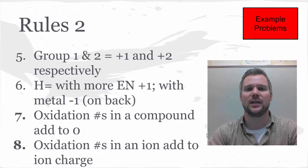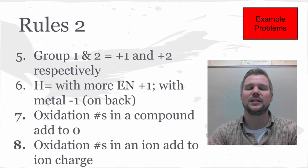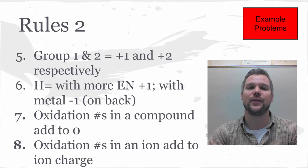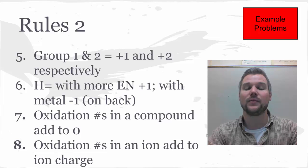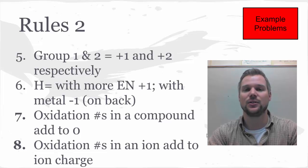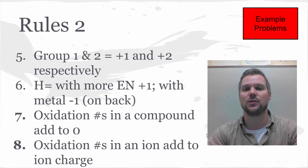Finally, the oxidation numbers in an ion—a polyatomic ion is where we're going to see this—need to add to that ion charge. So if we're talking about phosphate, all of the atoms need to end up having an oxidation number set that equals -3, since the phosphate ion's charge is -3.